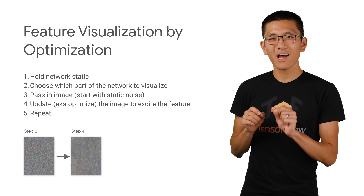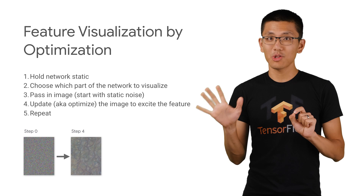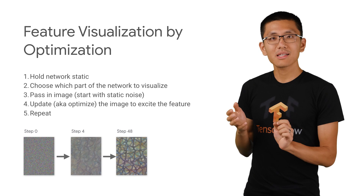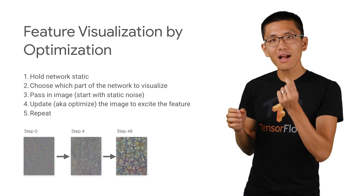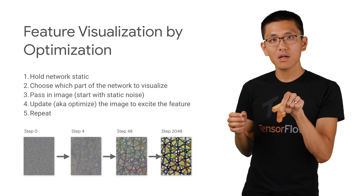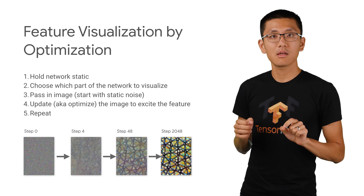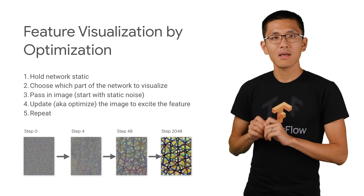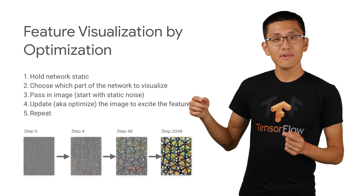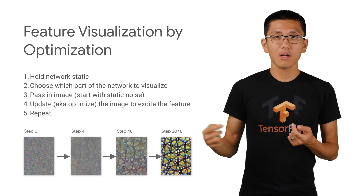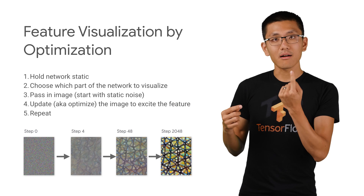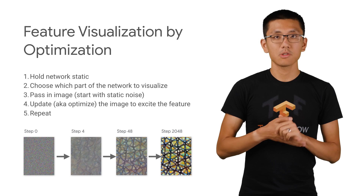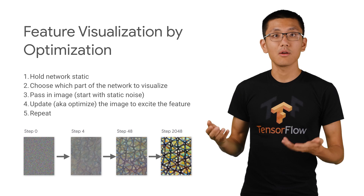Because neural networks are differentiable, we can figure out how to adjust that input image — that noise — to get an even higher activation value for that specific neuron we're interested in. So we tweak that image a little bit, and if we're doing it right, the activation of the neuron will be even higher when we pass that image through a second time. So then we can do it again.